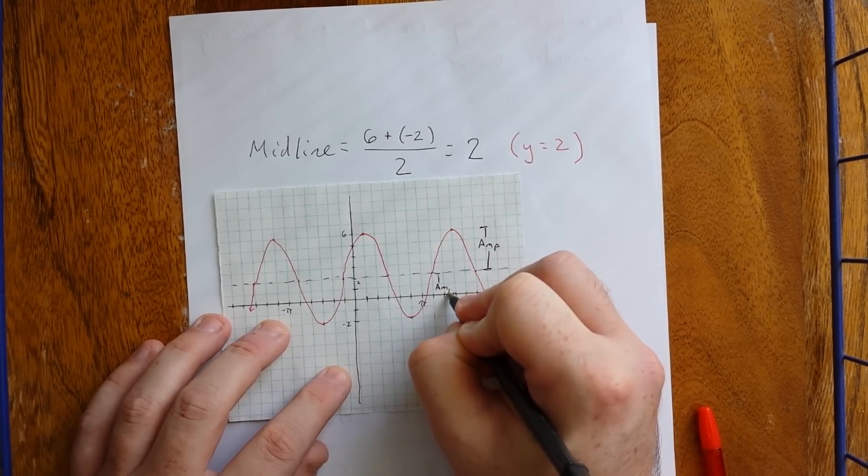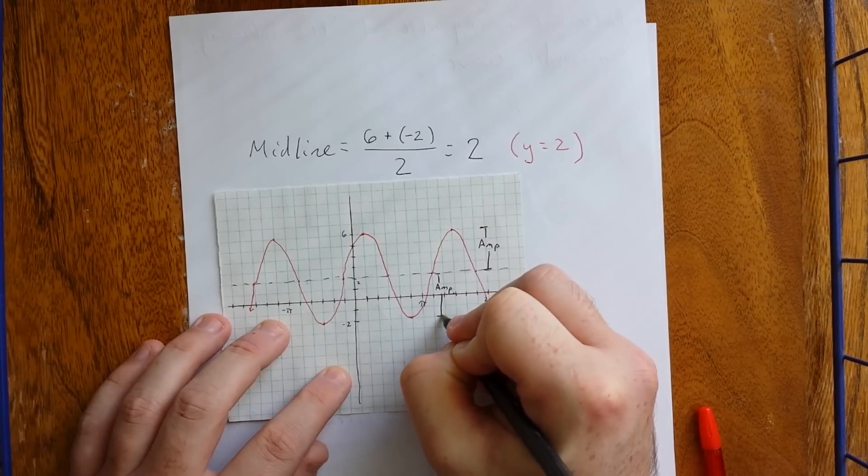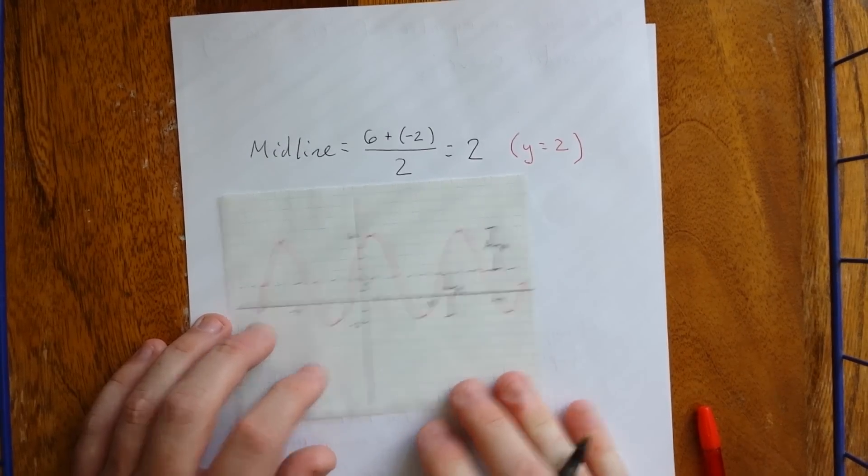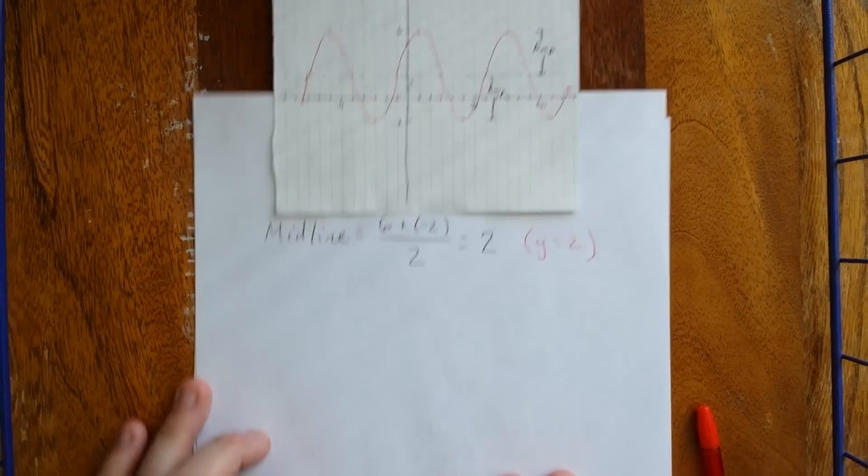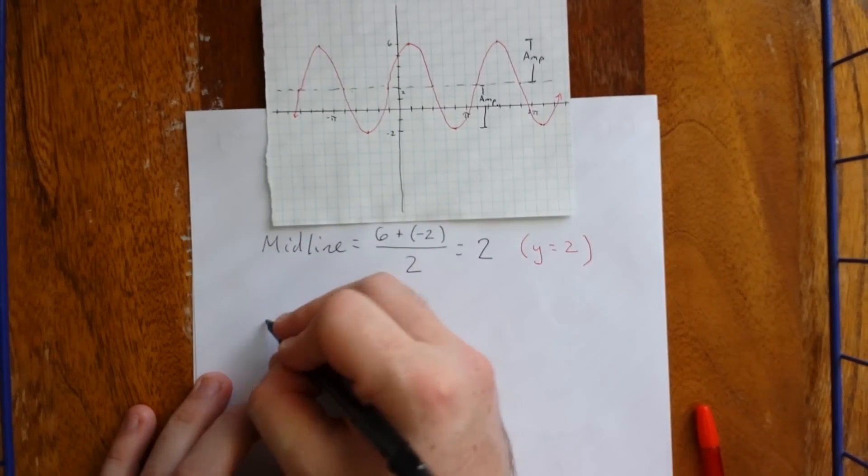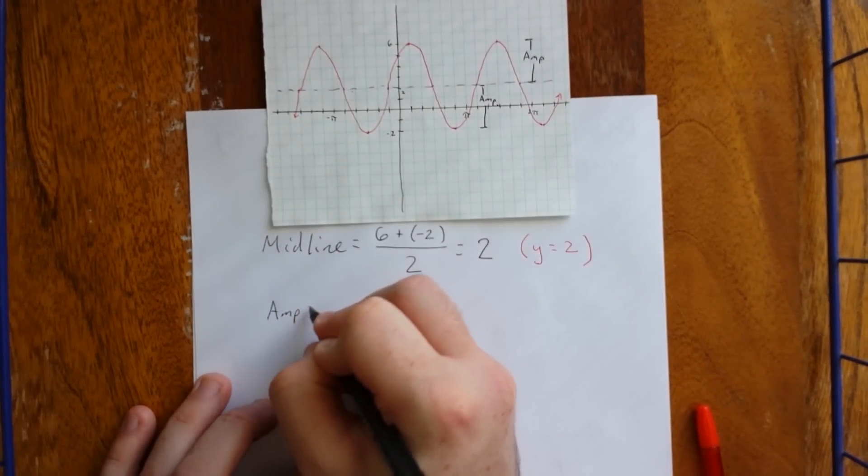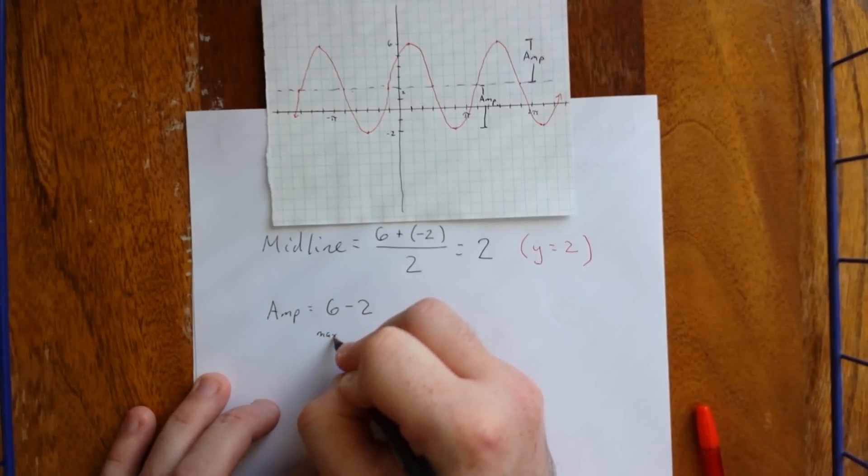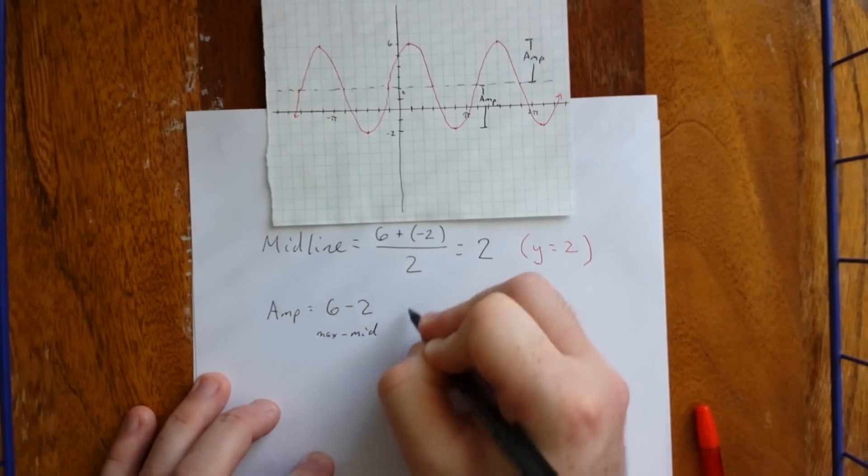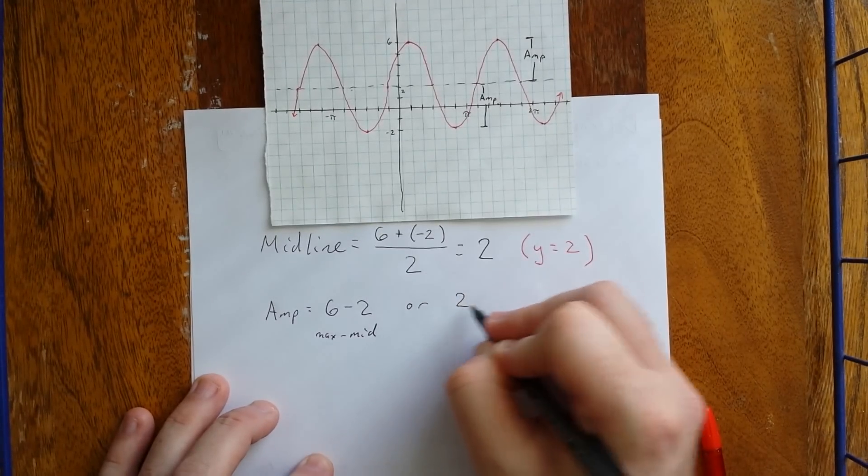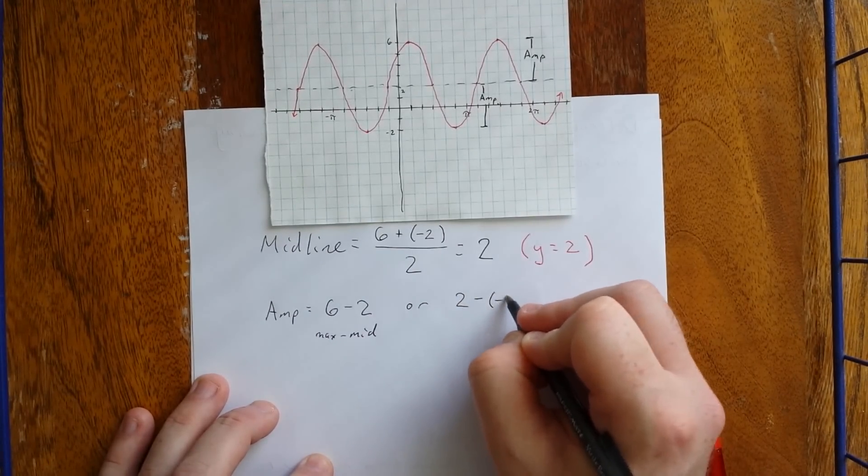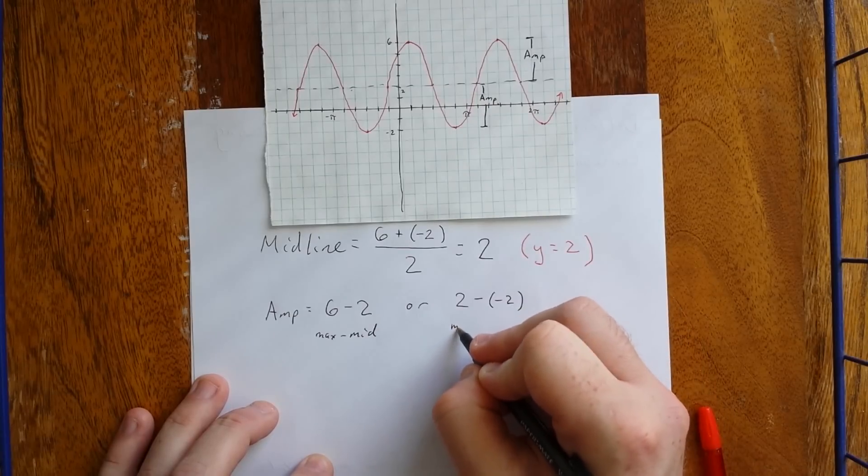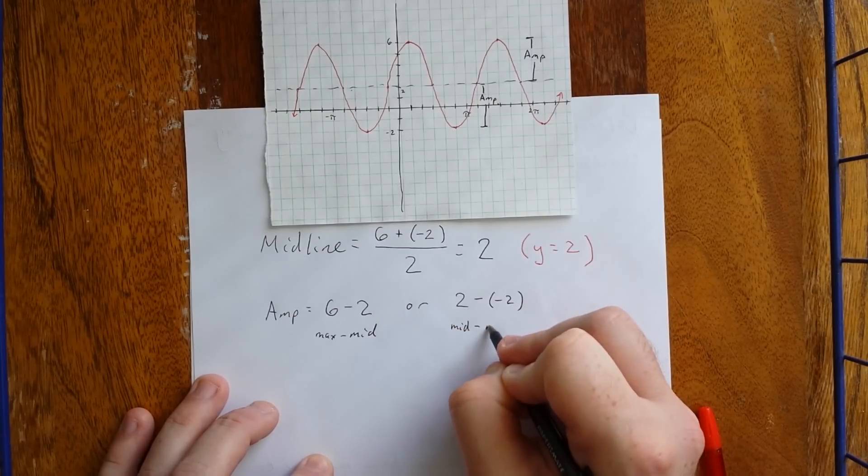So, now an amplitude is going to be the vertical distance in between the midline and a maximum or the midline and a minimum. Now, to calculate the distance between two things, we would subtract. So, the amplitude, you can either calculate as 6 minus 2 for the maximum minus the midline, or we can calculate it as 2 minus negative 2, which would be midline minus minimum.